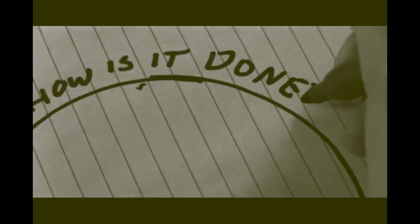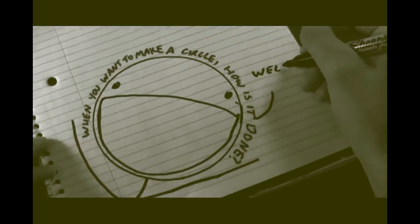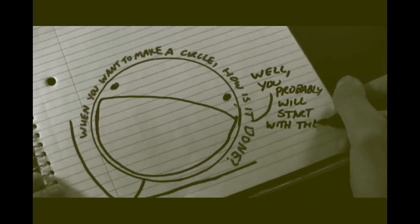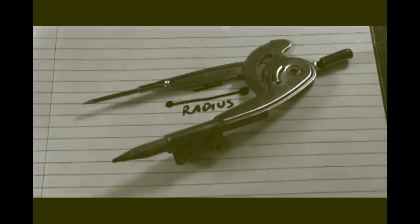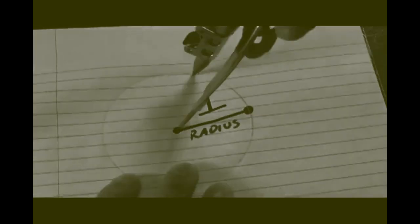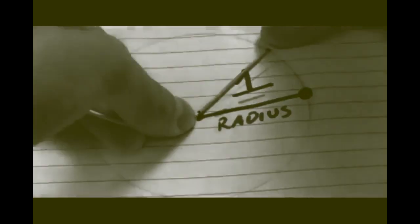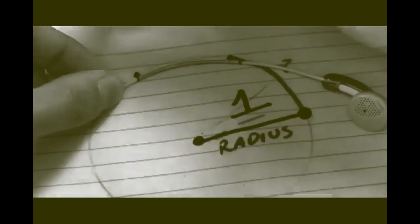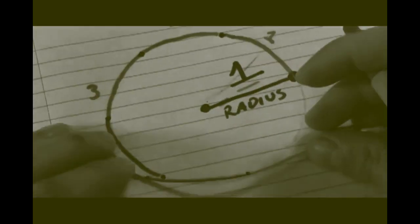When you want to make a circle, how is it done? Well, you probably will start with the radius one, then use a compass or a string, and use a paper or the ground. And if the radius is one, how far did you go around?